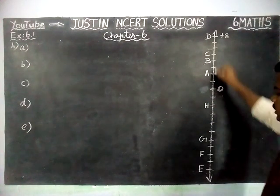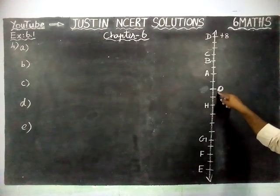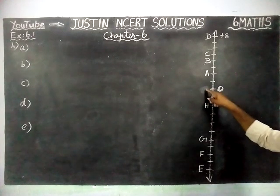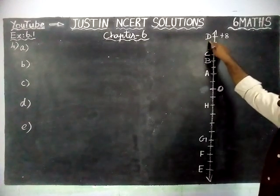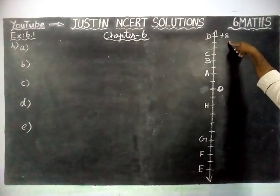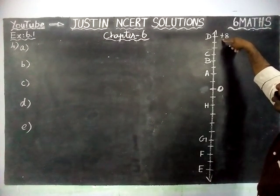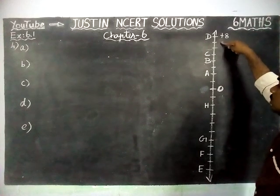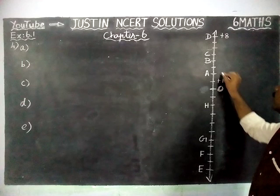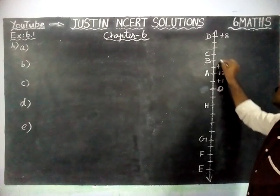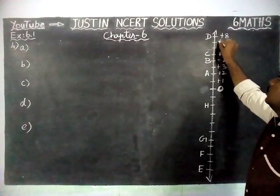Here, all these points are integers. The center point is 0, and when we are taking a starting point, that is O. From 0, above 0 that is positive numbers: plus 1, plus 2, plus 3, plus 4, plus 5, plus 6, plus 7.